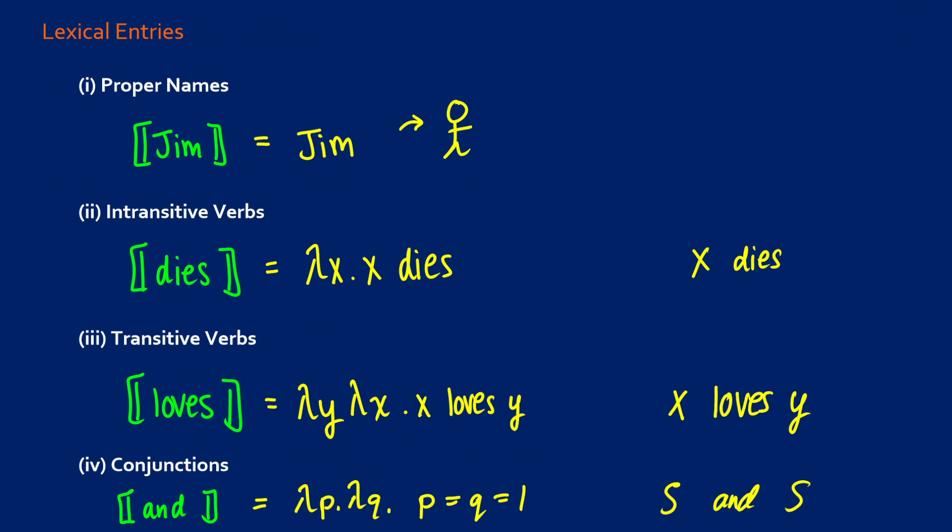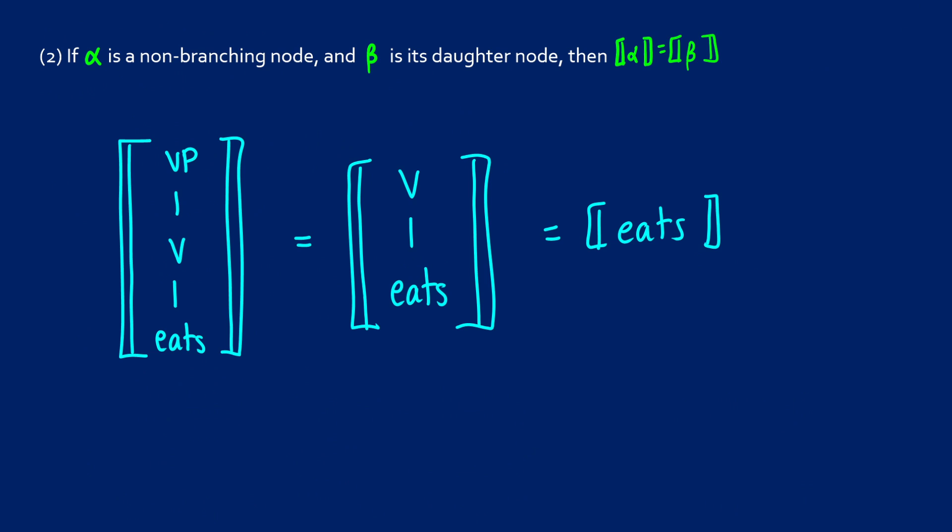So what happens now for our higher nodes? Well, if we have alpha as a non-branching node, so this means that alpha goes to one thing beta, then what we say is that the meaning of alpha is the same as the meaning of beta. Basically the meaning passes up.